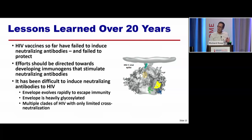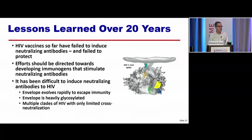What we've learned is that HIV vaccines so far have failed to induce neutralizing antibodies and failed to protect. Our current feeling is that we should really be putting our efforts into inducing neutralizing antibodies — but that's going to be difficult because the envelope rapidly evolves, is heavily glycosylated, and there are multiple clades of HIV with very limited cross-protection between them.